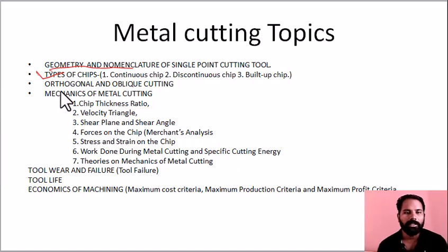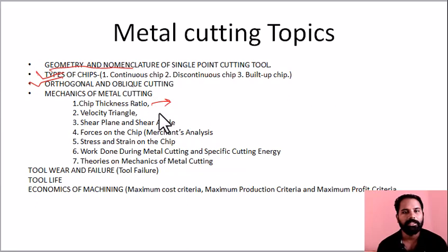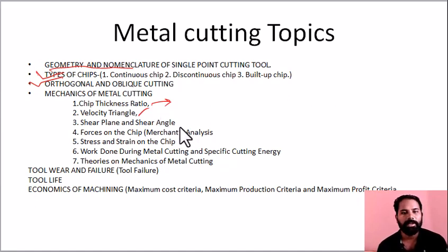Next is oblique cutting. In the mechanics of metal cutting, we cover chip thickness ratio — expressed in terms of thickness, length, velocity, and angle — as well as the chip reduction ratio, velocity triangle, and shear plane angle and its effects.